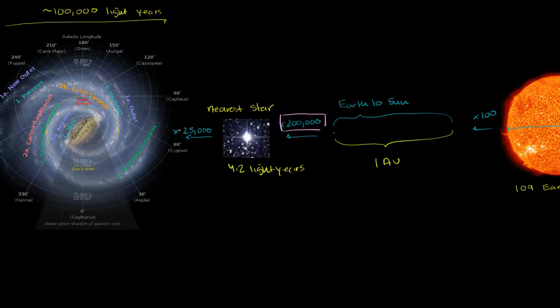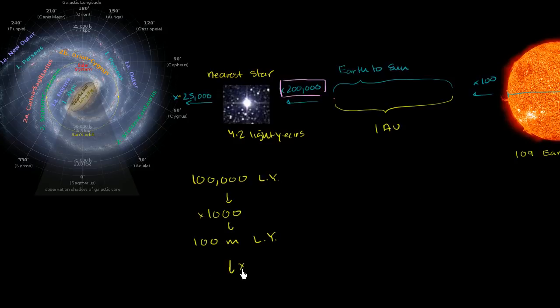You would have to multiply this number. 100,000 light years, that's the diameter of the Milky Way. You would have to multiply it not by 1,000. 1,000 would get you to 100 million light years. This is 100,000 times 1,000 is 100 million. You have to multiply by 1,000 again to get to 100 billion light years. And the universe, for all we know, might be much, much larger. It might even be infinite. Who knows? But to get from just the diameter of the Milky Way to the observable universe, you have to multiply by 1,000.